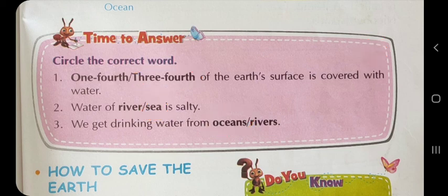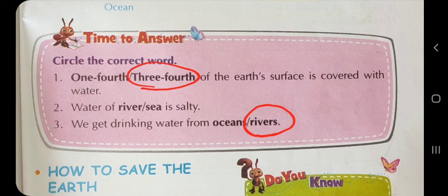Which water can we drink? We get drinking water from the rivers. The water of the sea is salty and we get drinking water from the rivers.